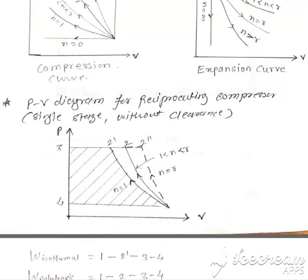Now let us draw the PV diagram. Let us understand the PV diagram for a reciprocating compressor. Here we are considering three processes: polytropic process, isothermal process, and isentropic process.